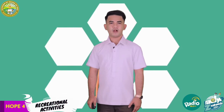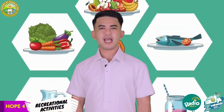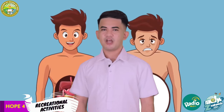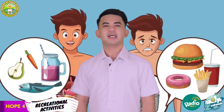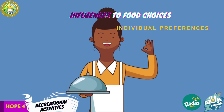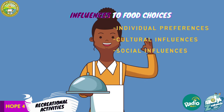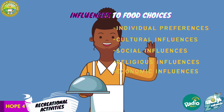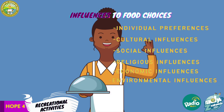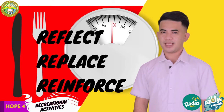Being physically active also includes eating right. So let's talk about food and our eating habits. Eating habits refer to why and how people eat, which foods we eat, and with whom we eat, as well as the ways people obtain, store, use, and discard food. There are also factors that influence eating habits. Influences on food choices include individual preferences, cultural influences, social influences, religious influences, economic influences, environmental influences, and political influences.